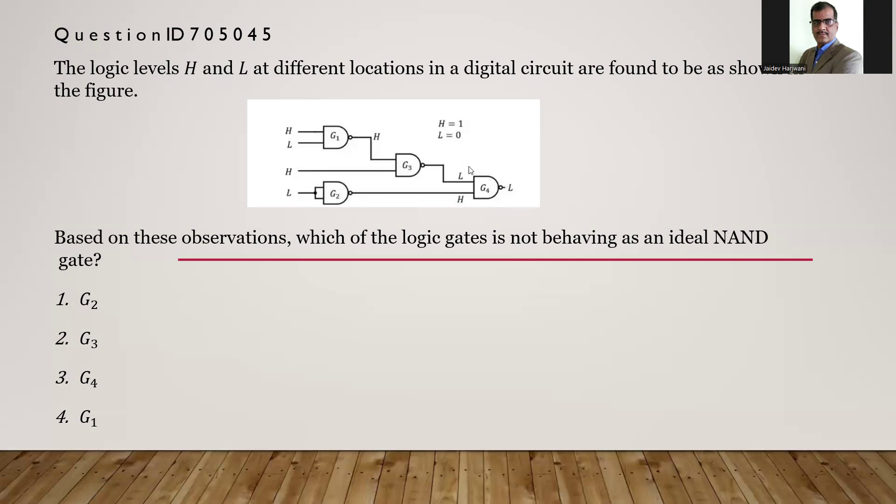Here H means high, high means one, L means zero. When you give L zero H one, this is zero and zero, should come again inverted and inverted should come high. So G4 is not behaving in a proper way. The answer is three, G4. Thank you very much.